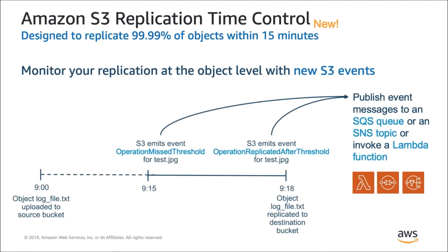In addition to the CloudWatch metrics, S3 Replication Time Control will publish events in the rare instance that an object doesn't complete replication within 15 minutes. Replication Time Control will also follow up with another event that tells you when that object did successfully replicate to its destination. Like other S3 events, you can receive these replication events using the AWS Simple Queue Service (SQS), the Simple Notification Service (SNS), or use them to invoke a Lambda function as needed.